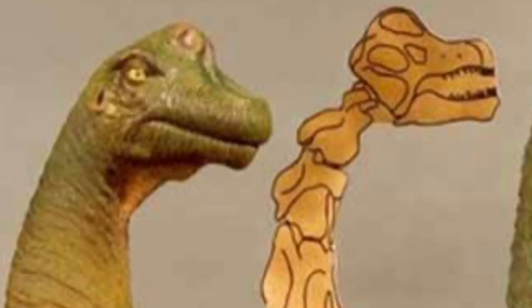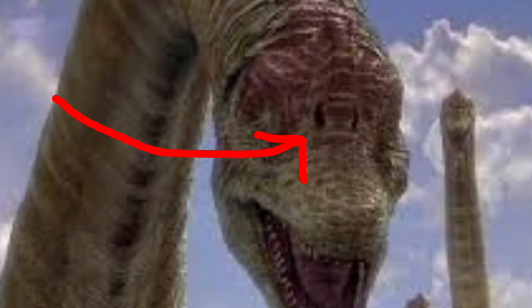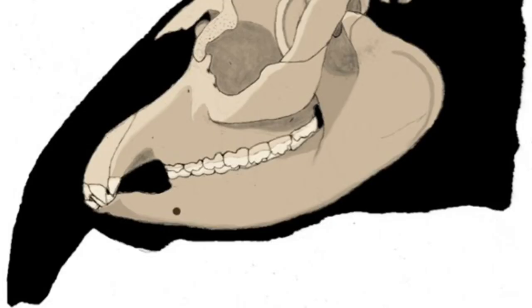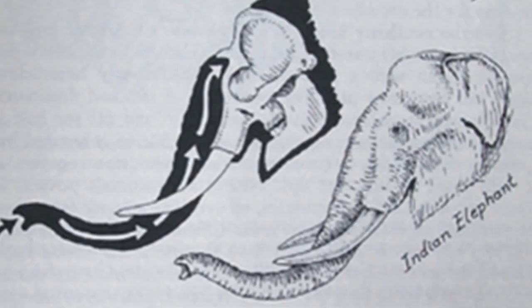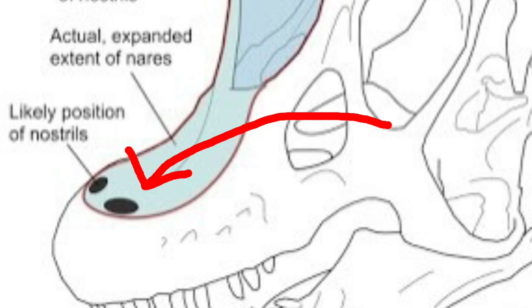Trunk Sauropods. This outlandish hypothesis was inspired by the original placement of sauropod nostrils, which was thought to be on the forehead. Many trunked animal skulls also have nostrils on their foreheads, which is where the trunk would connect. If sauropods had nostrils on their foreheads, they would have had trunks too. Well, the nostrils of sauropods are now thought to be placed on their snouts, so the trunk hypothesis is unlikely nowadays.